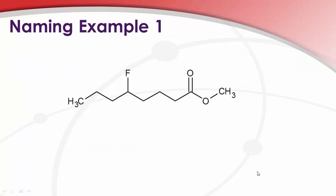So a little example, 2, 4, 6, 8. This would be octanoate, because that's the acid side. 1, 2, 3, 4, 5. 5-fluoro-octanoate, methyl-5-fluoro-octanoate.